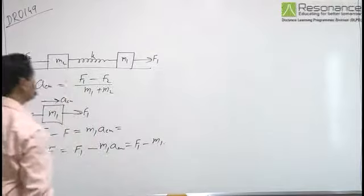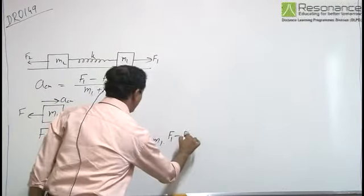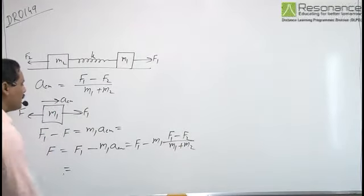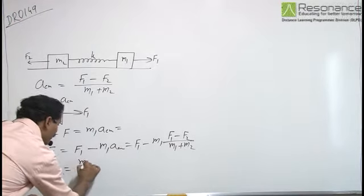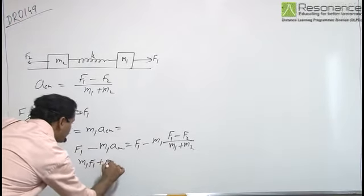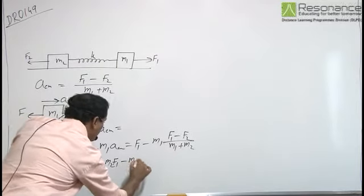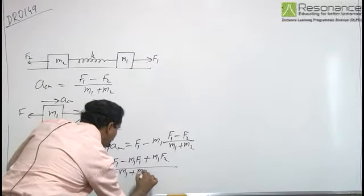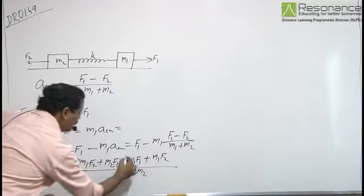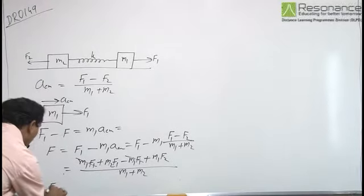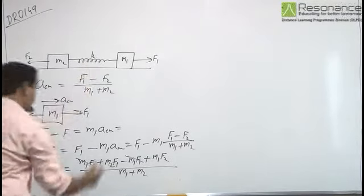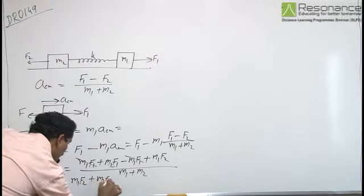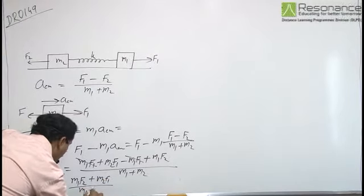Simplifying this algebraic expression, the force applied by the spring on the block is (M1 times F2 plus M2 times F1) divided by (M1 plus M2).